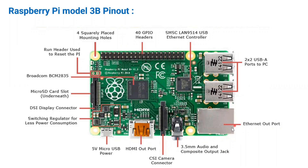There is an Ethernet output port where you can connect wired internet. Two sets of USB ports are shown — giving four USB ports total. There is an integrated circuit which is a USB and Ethernet controller, acting as controller for all these interfaces.